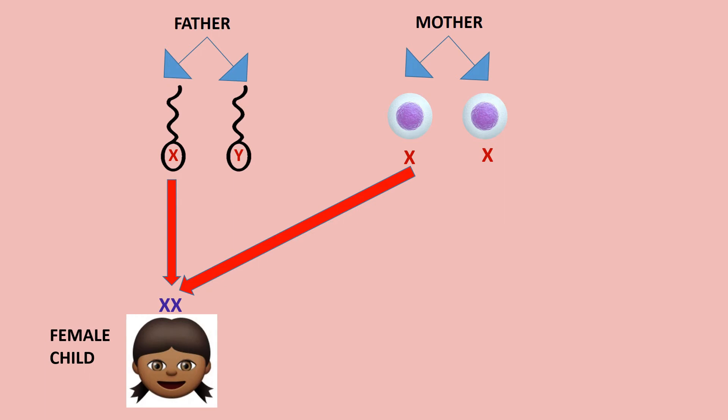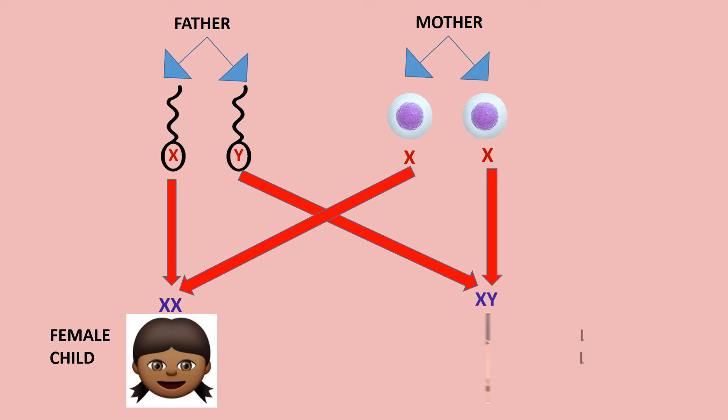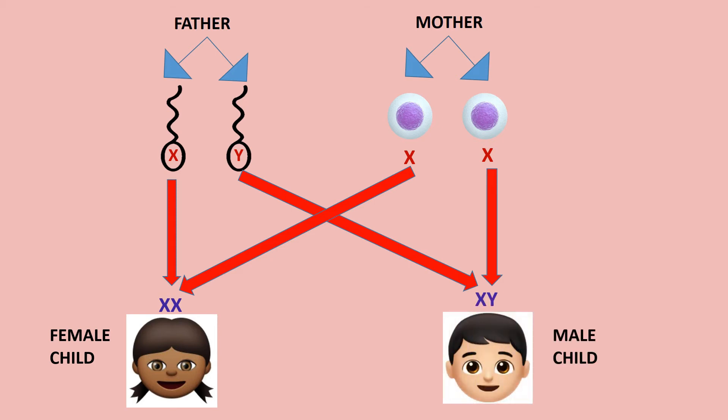When the sperm cell containing the Y chromosome from the father fuses with the X ovum from the mother, it forms XY — giving rise to a male child. So the X and Y factors are responsible for the formation of a female or male child.